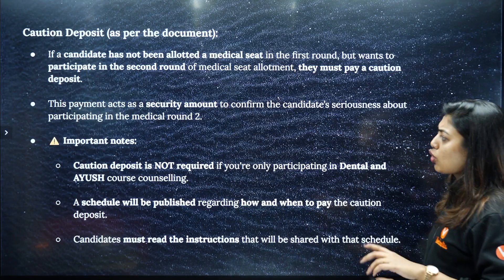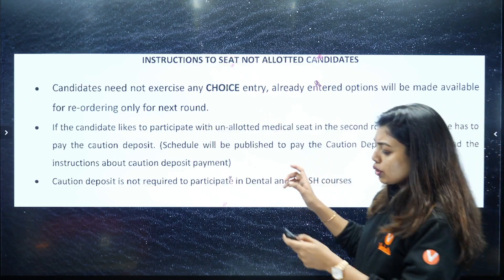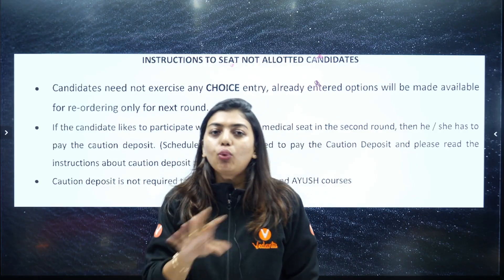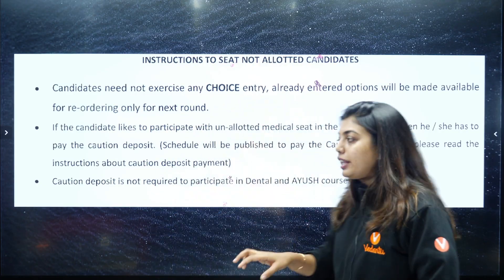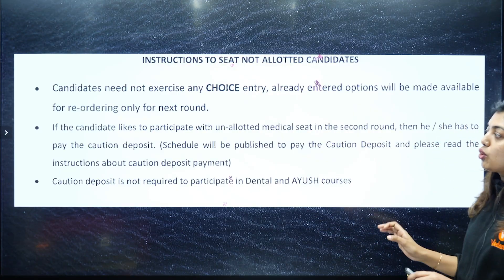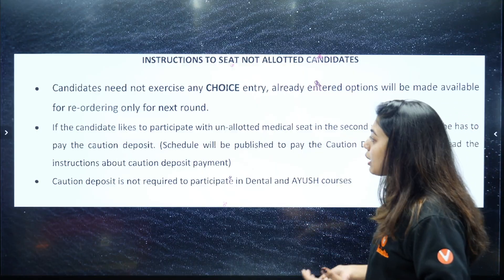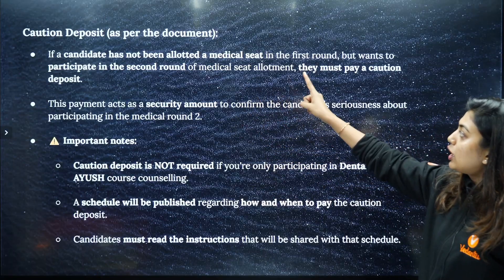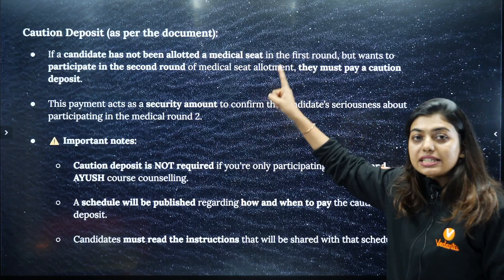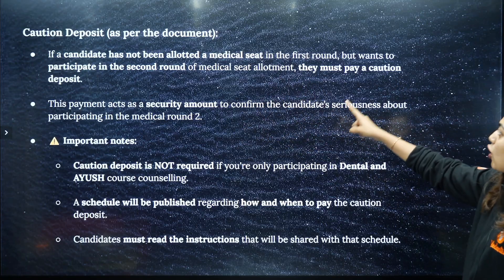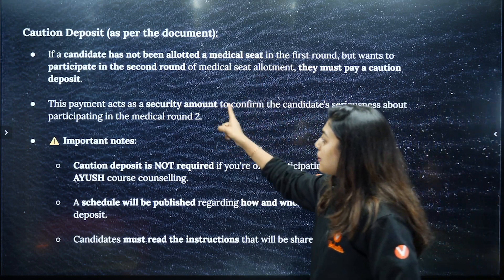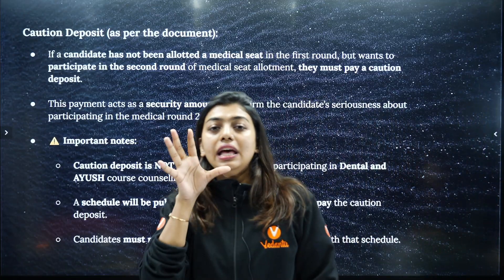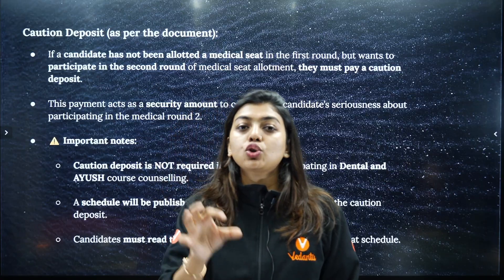Now talking about caution deposit. Caution deposit is for students who have been allotted a medical seat but don't want that seat and want some other unallotted seat. For that, you have to pay an amount to show that you are taking the process seriously. Also, if a candidate has not been allotted a medical seat in the first round but wants to participate in the second round of medical seat allotment, they must pay a caution deposit — this payment acts as a security amount to confirm the candidate's seriousness.